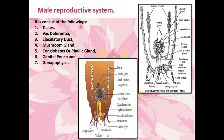The male reproductive system of cockroach consists of the following parts: number one, testes; number two, vas deferentia; number three, ejaculatory duct; number four, mushroom gland; number five, conglobate or phallic gland; number six, genital pouch; and number seven, gonapophysis. All these seven organs together form the male reproductive system in cockroaches, and here are the diagrams given as a pencil sketch with all the reproductive organs labeled.